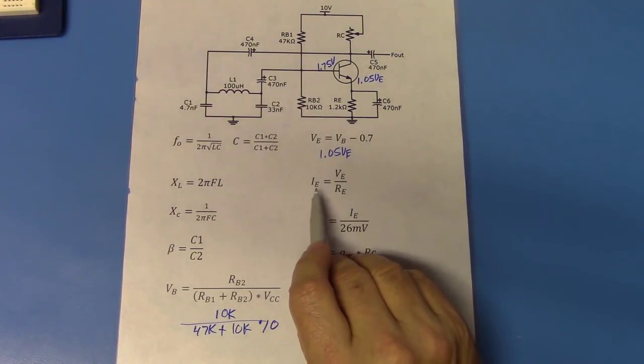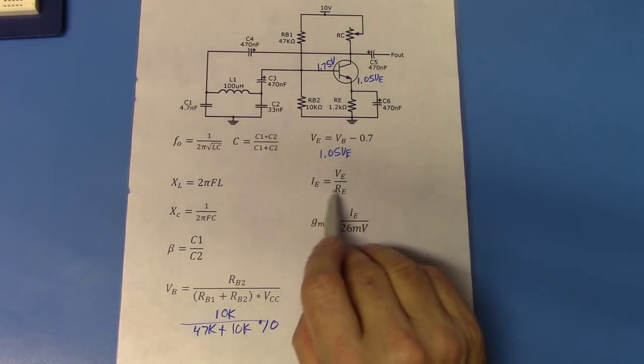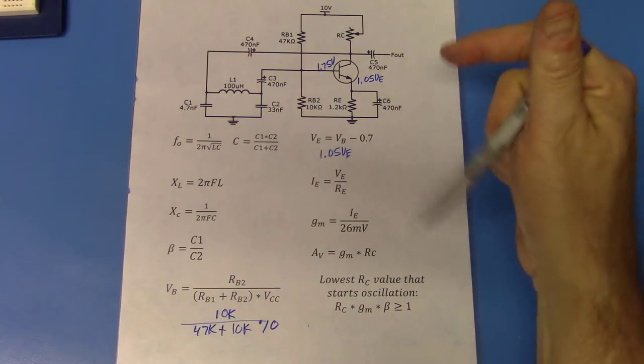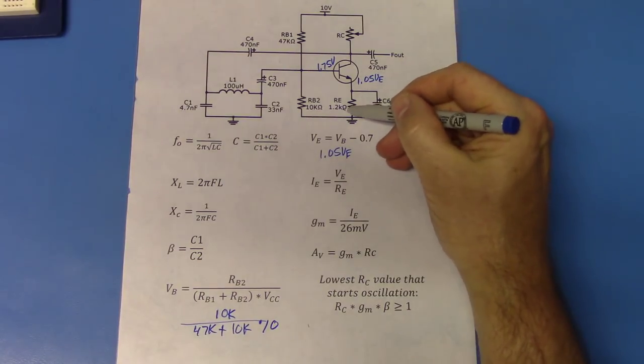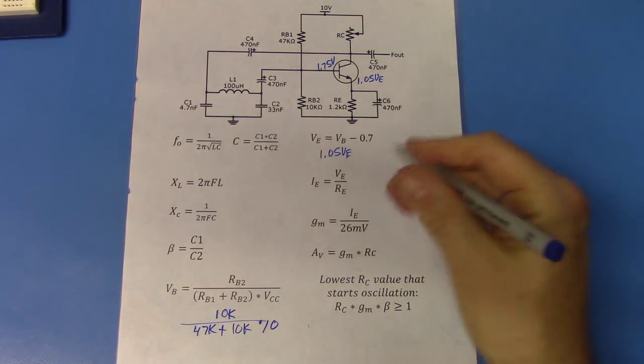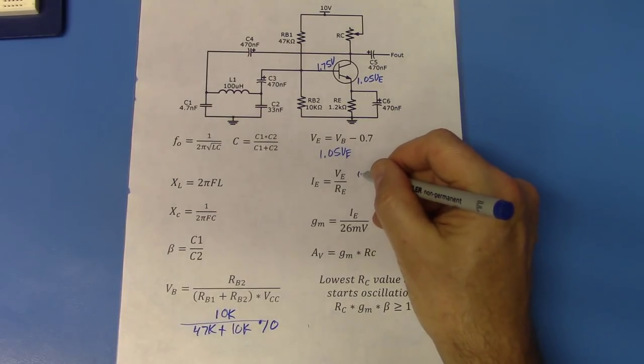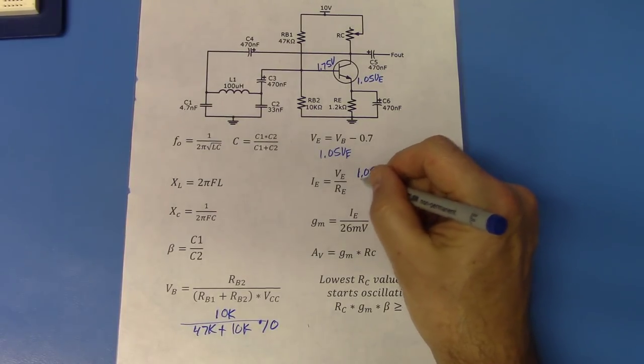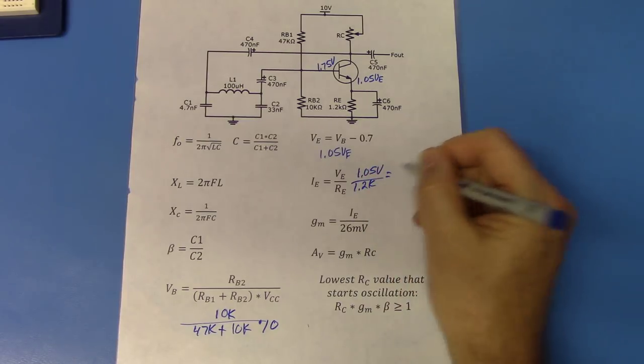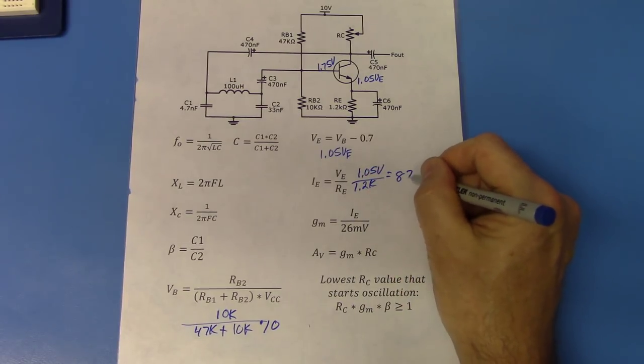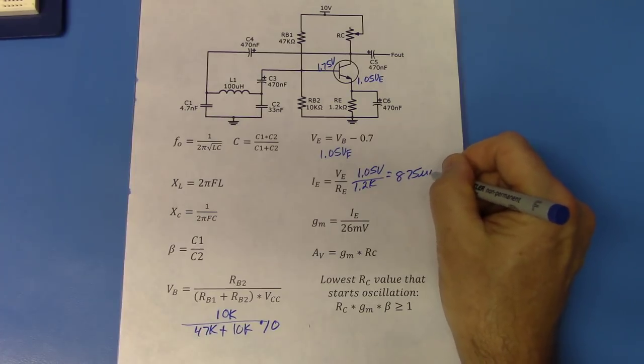Now that we have 1.05 volts, so we know the emitter voltage, we can just use Ohm's law. And 1.05 divided by the 1.2k ohm resistor, RE, will give us a current of 875 micro amps.